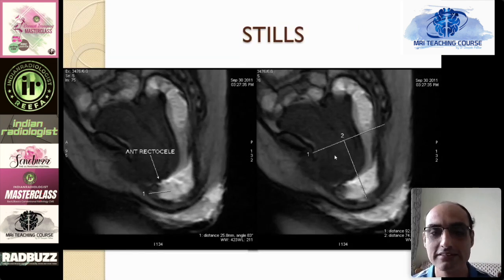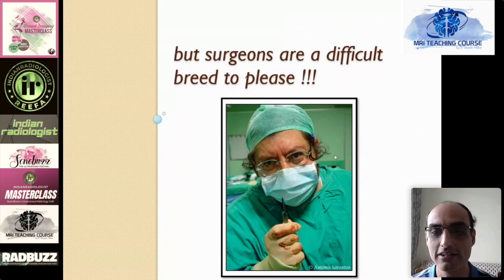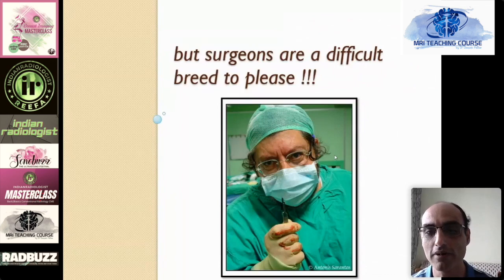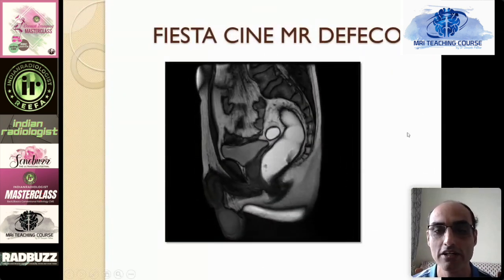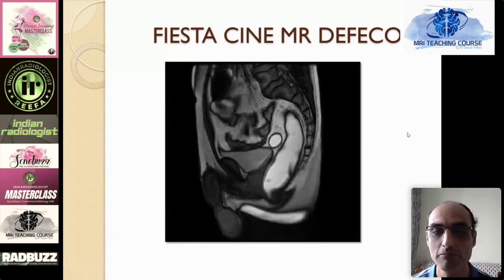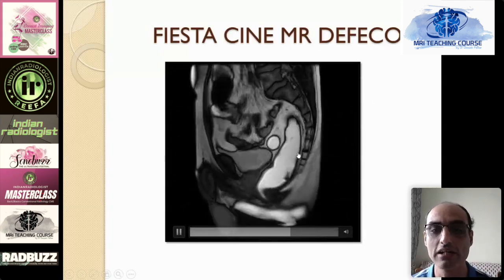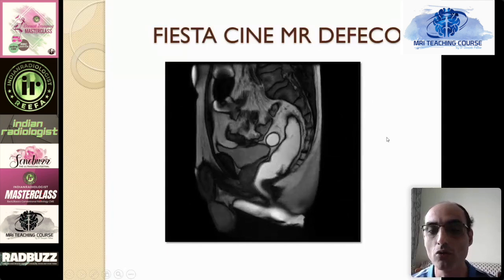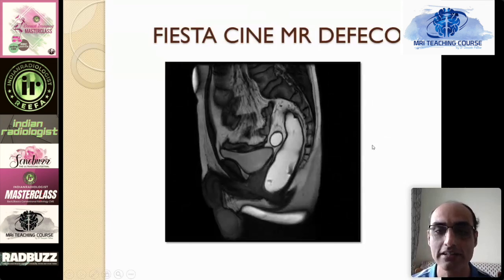We radiologists were reasonably happy with those images, but the surgeons always want more — they wanted more information for the middle and anterior compartments. So we continued evolving. Now what we do is the Fiesta Cine MR defecogram, which is essentially a T2-weighted defecogram. The advantages are obvious: you can see all three compartments — anterior, middle, and even small bowel loops. Also, we no longer need to mix gadolinium with the ultrasound jelly; the ultrasound jelly placed in the rectum inherently has a bright T2 signal.